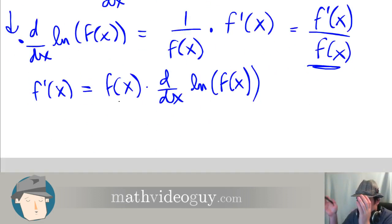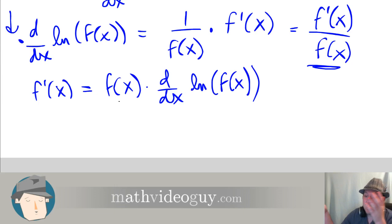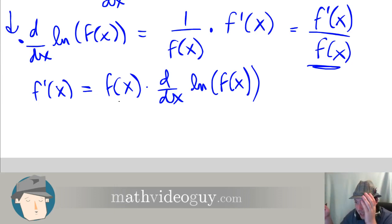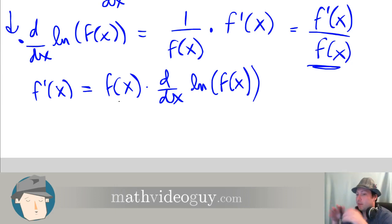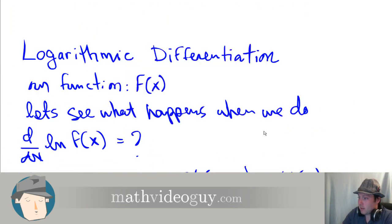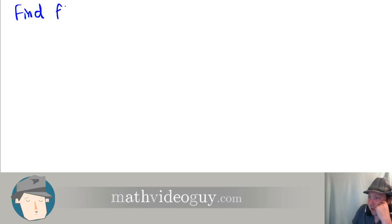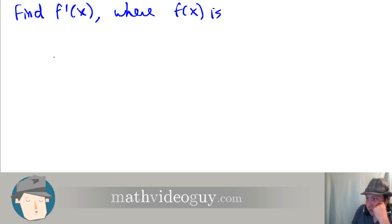So when would we use this result? We would use this result when taking the derivative of ln of the function makes our life way much easier. Suppose someone tells you to take the derivative of something extremely complicated. What you can do is take ln of it, then take the derivative, then multiply by that function, and you're done. So let's look at an example. Find f prime of x, where f of x is...